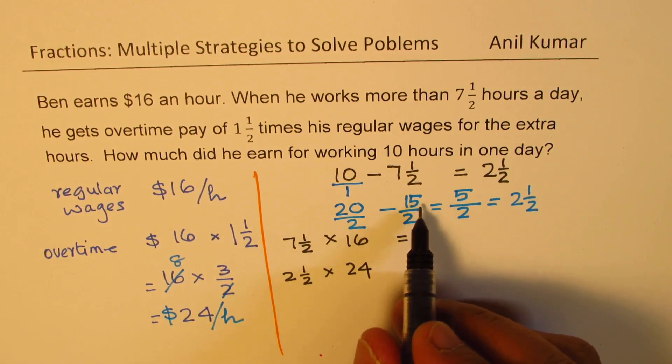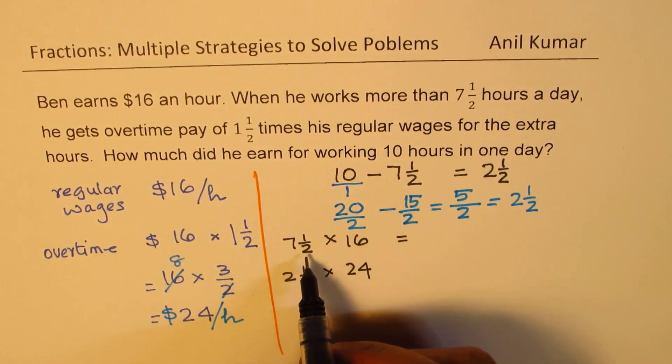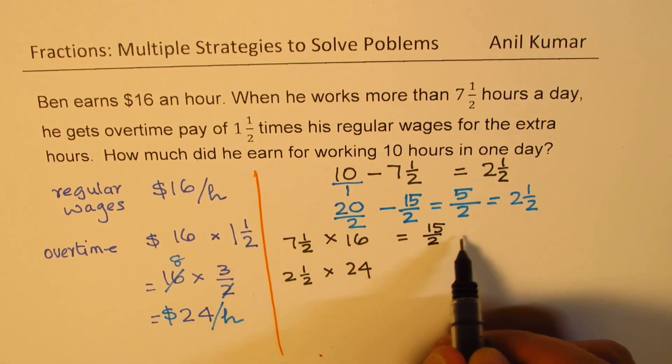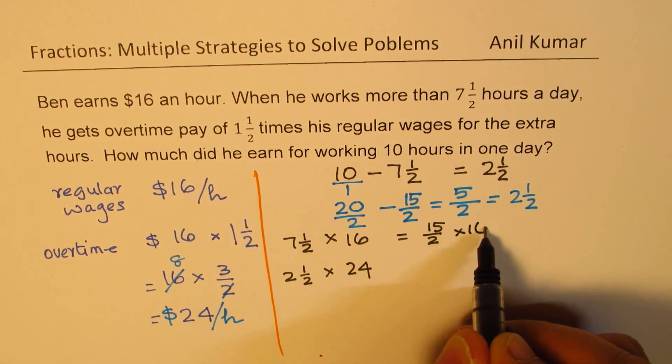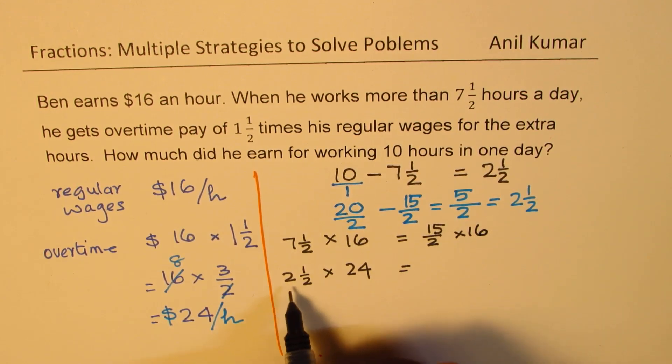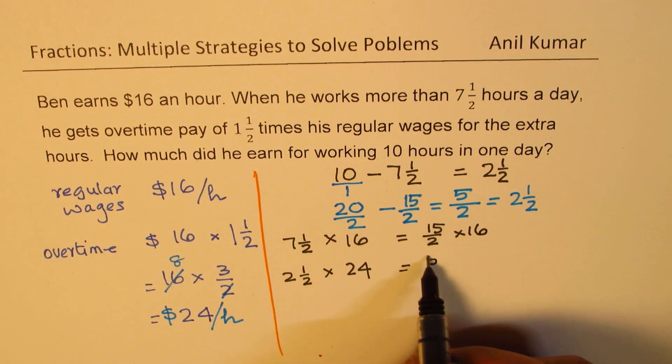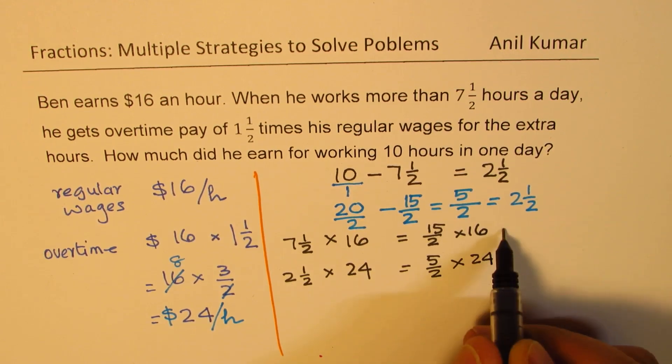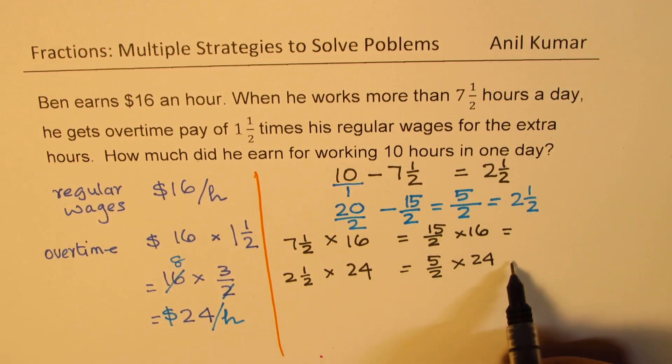7 and a half as we did earlier, 7 times 2, 14 and 1, 15. So it is 15 over 2. We need to multiply this by 16. And in this case, it is 5 over 2, which we need to multiply by 24.